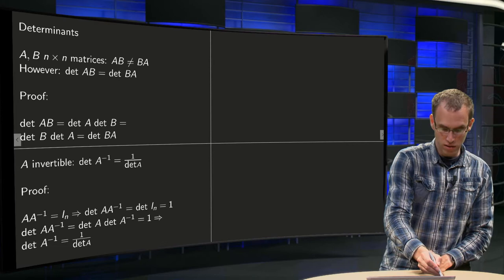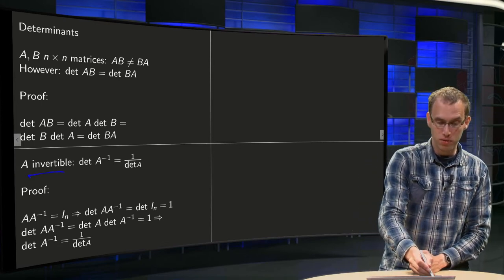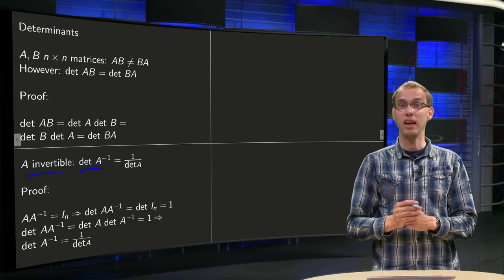If the matrix A is invertible, so in particular it is a square matrix, an invertible matrix, then the determinant of A inverse equals 1 over det A. Well, why is that?